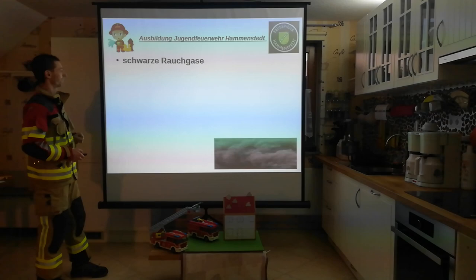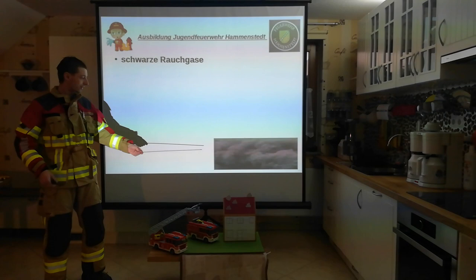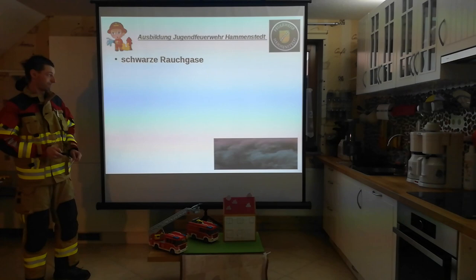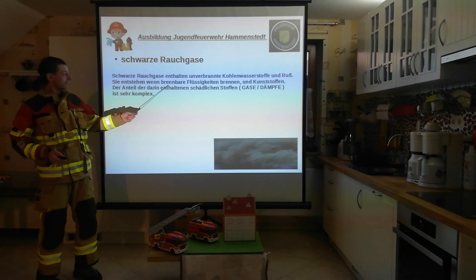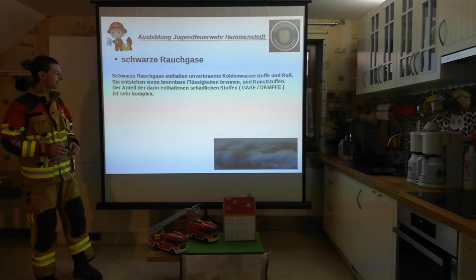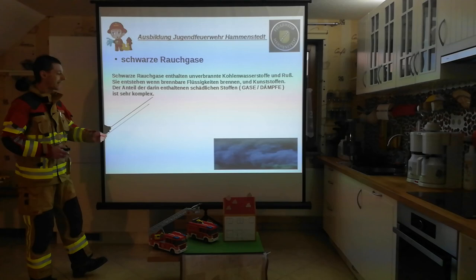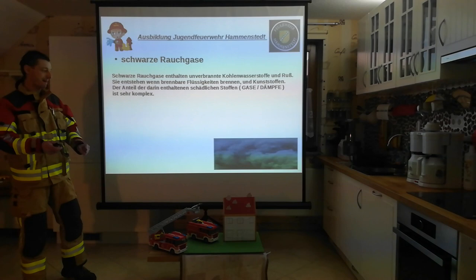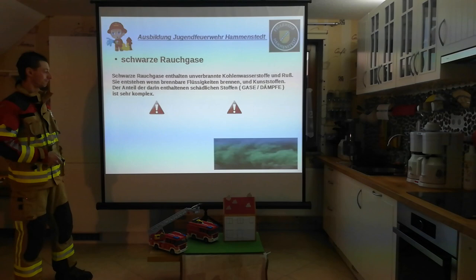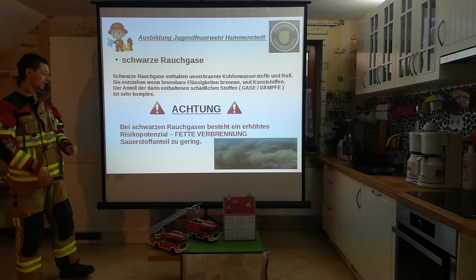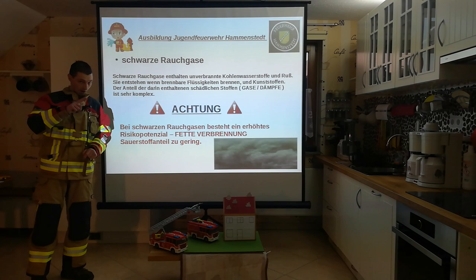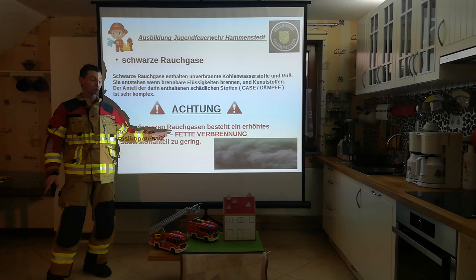Black smoke gases. You've certainly seen these black sooty plumes when something is burning. Black smoke gases contain unburned hydrocarbons and soot. They occur when, for example, flammable liquids or plastics burn. The proportion of harmful gases and vapors contained is very complex — essentially almost everything is present. That's why this type of smoke is so dangerous. There is an elevated risk potential because we are dealing here with what is called a rich combustion, meaning the oxygen content is too low — but this has nothing to do with cooking fats.